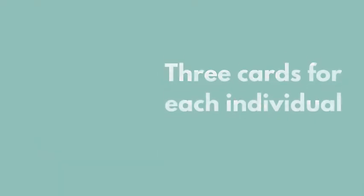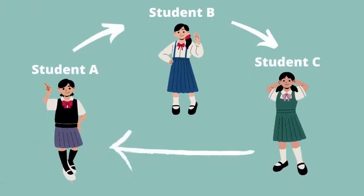Players can look at their own cards at the same time. Now the game starts — everyone will try to guess their friends' cards. For example, Student A tries to guess Student B's cards.